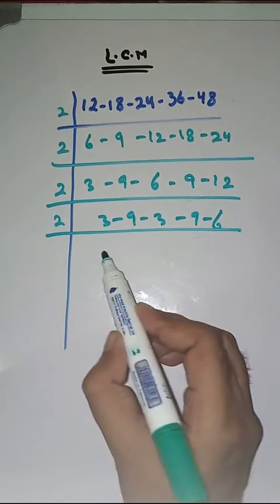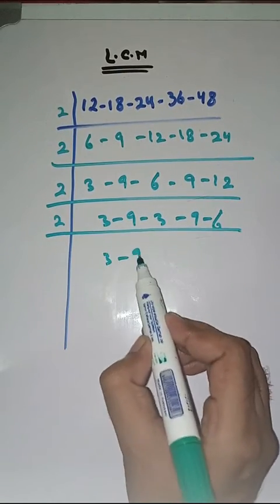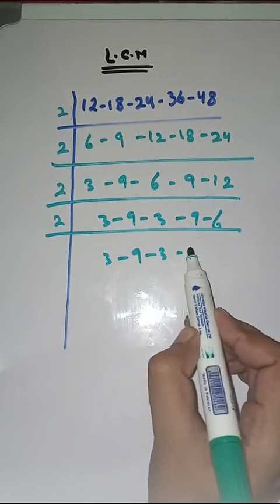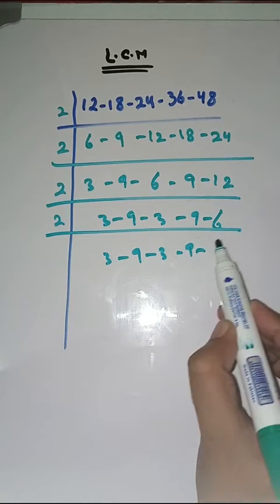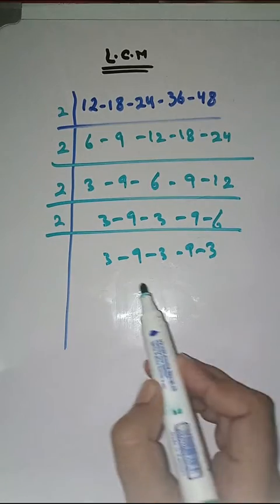Again with 2. 3 as it is, 9 as it is, 3 as it is, 9 as it is, 2 3s are 6.